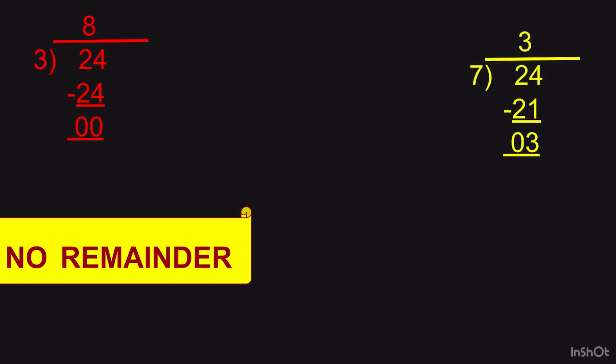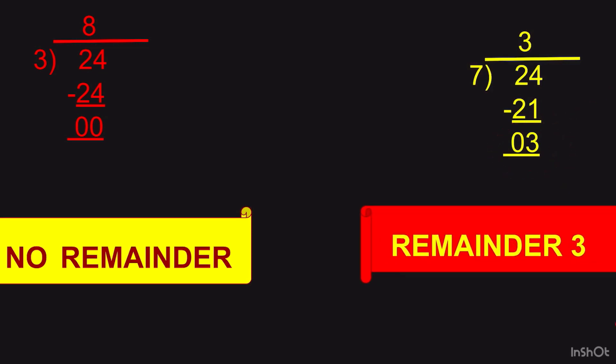When we divide 24 by 7, it goes 3 times — 7 threes are 21 — and we get remainder 3. So 7 is not a factor of 24. To figure out which numbers are factors of 24, we will need to know the divisibility rules. Divisibility rules help us identify numbers that divide evenly and give zero remainder.